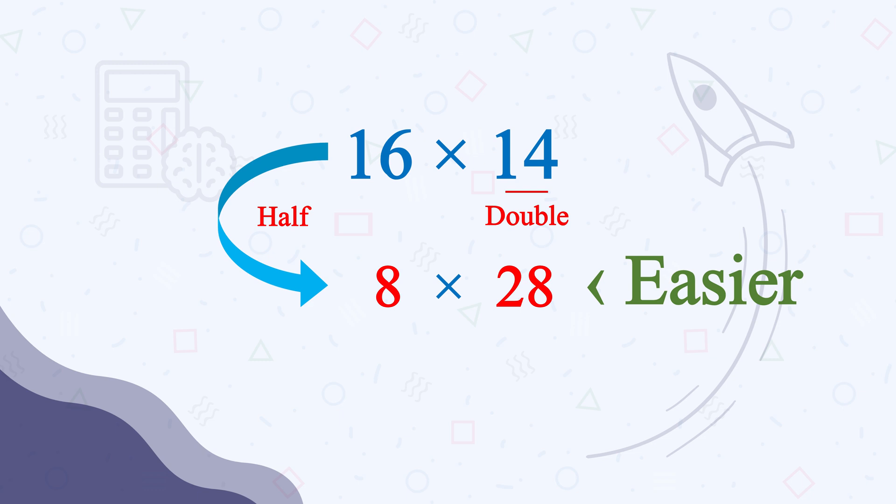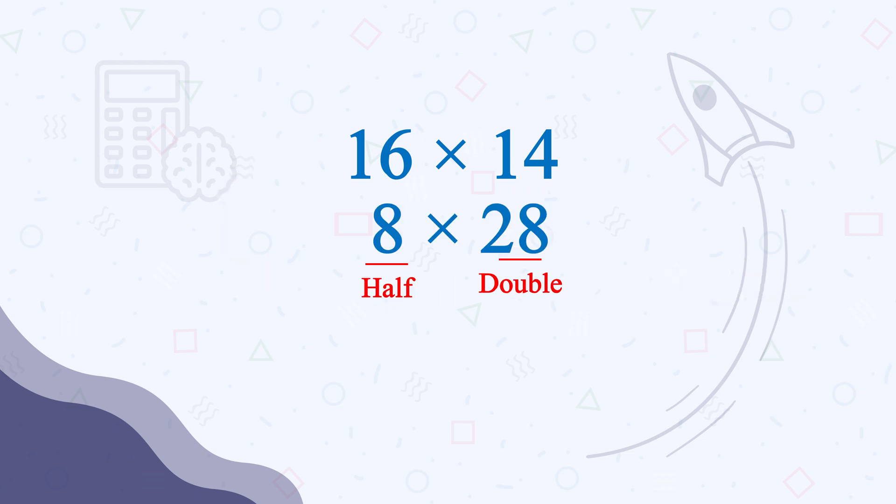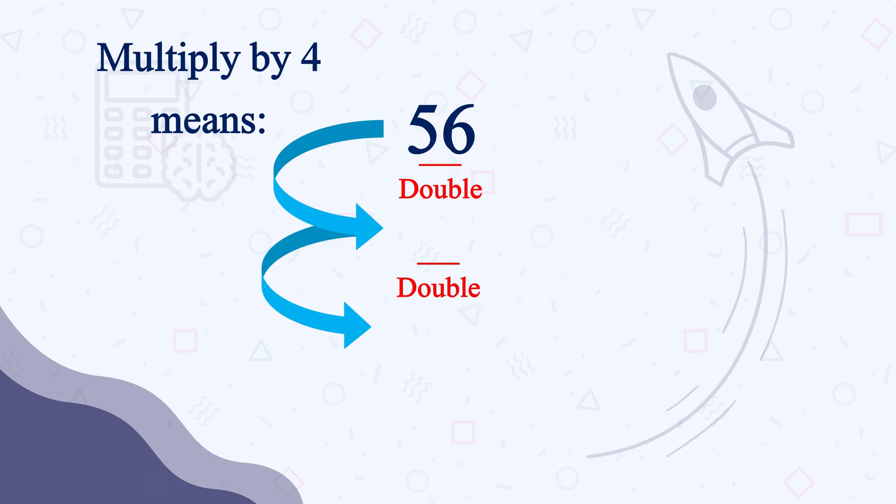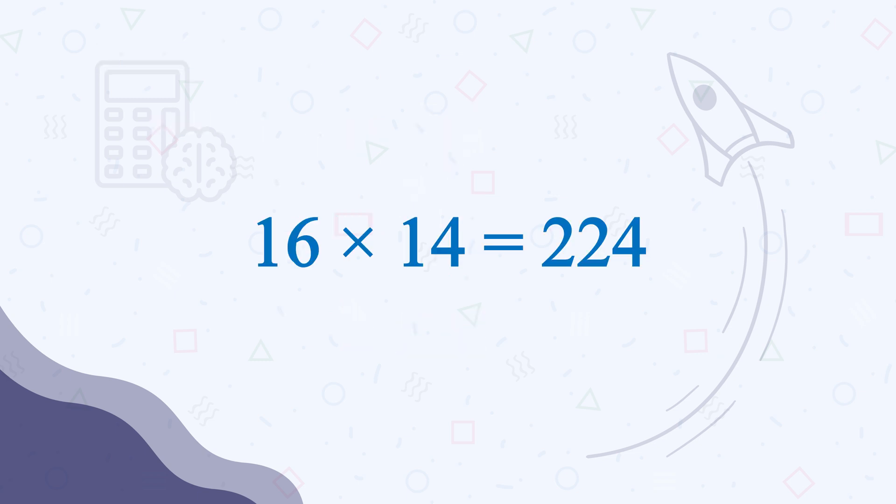But then again, if you find it difficult, you can repeat this process. You can take the half of 8 and double the other. It will be 4 times 56. Now we will not do any digit-by-digit multiplication since we are trying to be fast in mental math, and also we won't even get that much time in the exam hall. We will do everything in mind. Now to calculate 4 times any number, you just need to make it double twice. Double of 56 is 112, and double of 112 is 224. So 16 times 14 is 224.